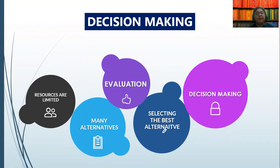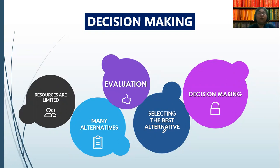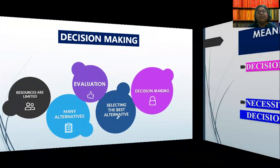Resources are limited — for example, funds are limited. There are many alternatives, and we need to analyze and evaluate those alternatives. Decision making is needed where resources are limited but there are many options. If we want to launch a product or a commodity, there are so many options. We analyze those options and on that basis, we select the best. This is called decision making.